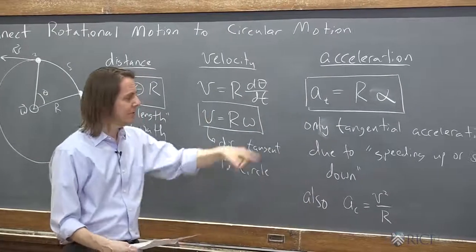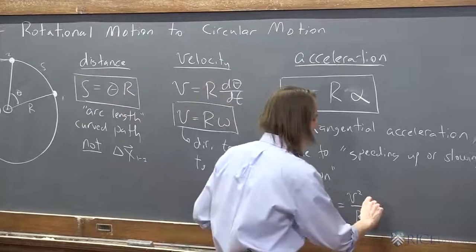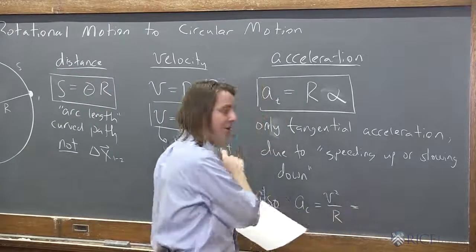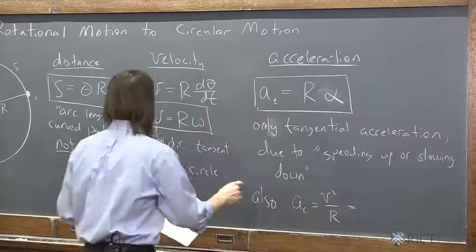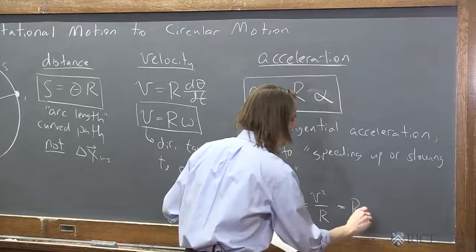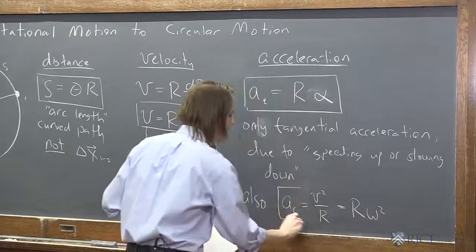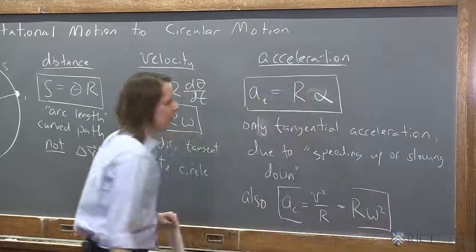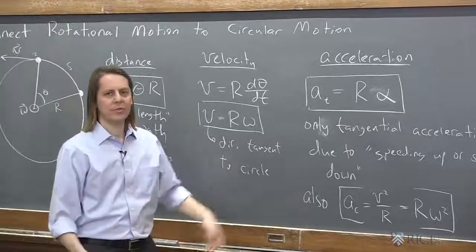While the object goes around, it still has centripetal acceleration. We could even, though, write it in terms of rotational quantities if we want. You can see if we just plug this in here, we get R omega squared. There you go. So we can get both components of acceleration.